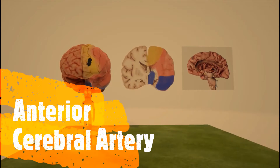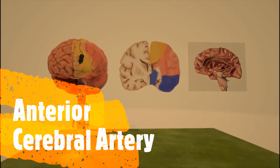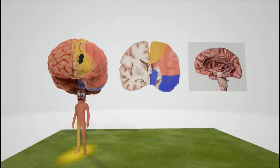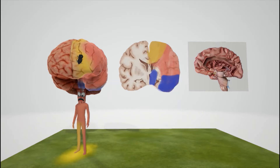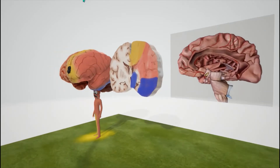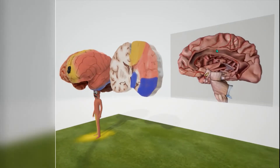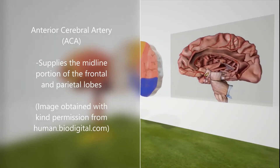Here we're going to talk about the anterior cerebral artery — what it supplies and what a stroke would do. Here is a picture of the anterior cerebral artery and what it's supplying.